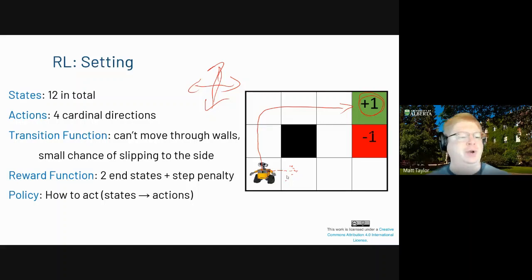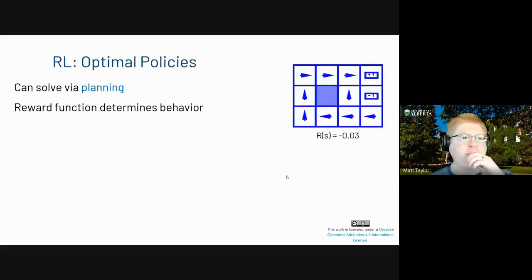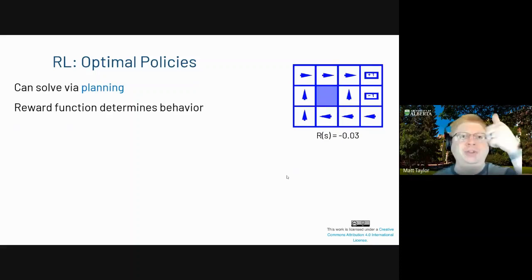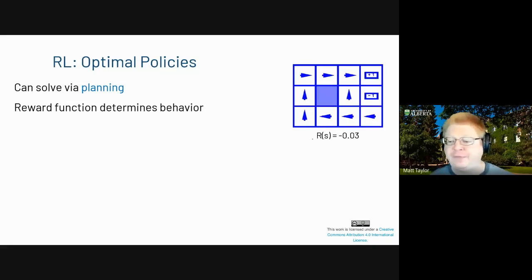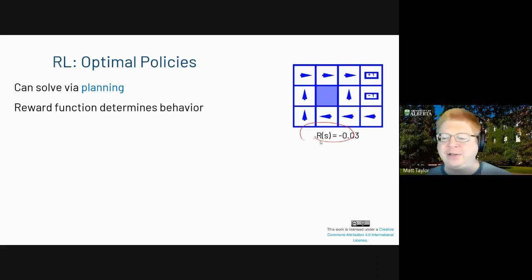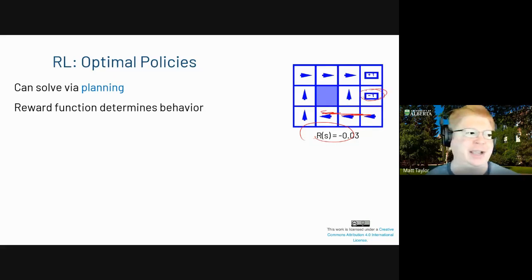If we knew all that information — the states, the transition function, and the reward — all of that a priori, then I could just solve via planning, where the reward function determines what the best behavior is. With a moderate step penalty, the thing to do is go up and around the top, and if you're at the bottom, you probably want to go left to minimize the chance of hitting the negative one.